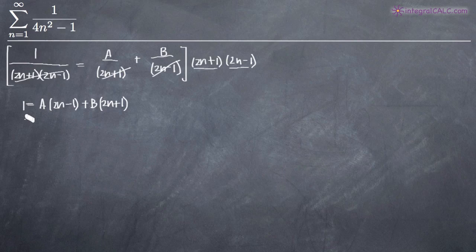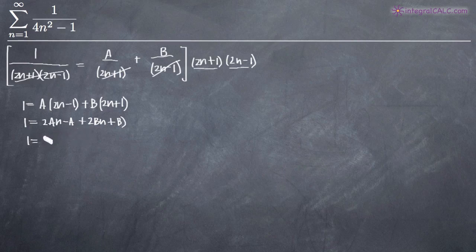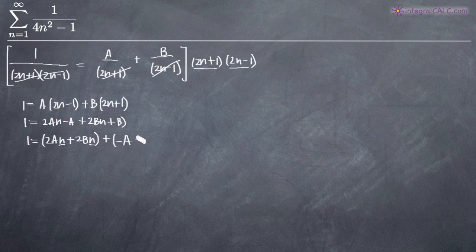Now it's just a matter of simplifying this equation and developing a system of simultaneous equations to solve for the coefficients A and B. Multiplying things out, we get 2An minus A plus 2Bn plus B. We'll group terms together: 2An plus 2Bn, since they both have an n variable, and then negative A plus B, since those are the constants with no n variable.